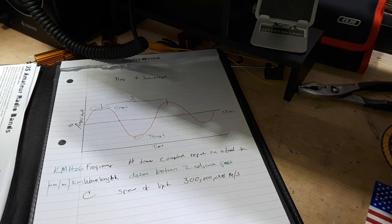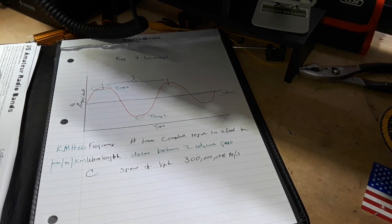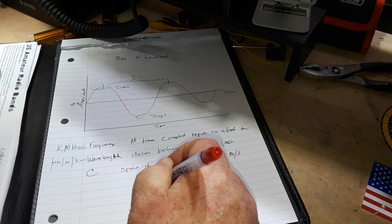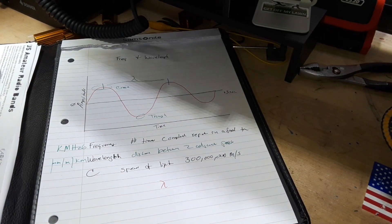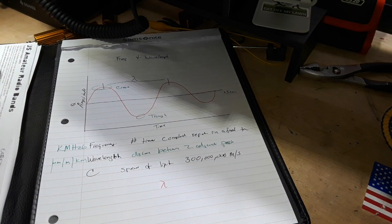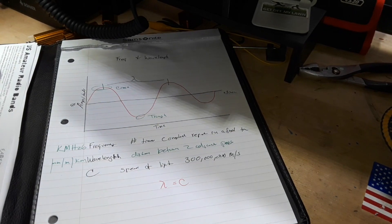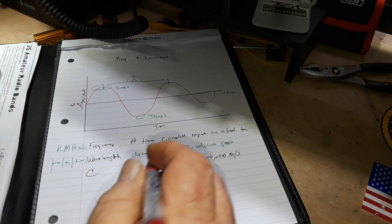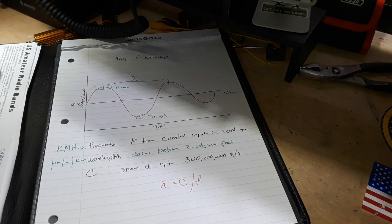Now we have everything we need for a simple calculation. Lambda — that's wavelength — is equal to c, the speed of light, divided by f, the frequency. That's really all the math we're going to get into today.